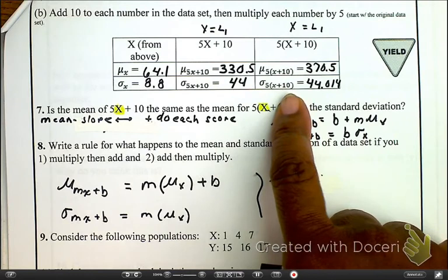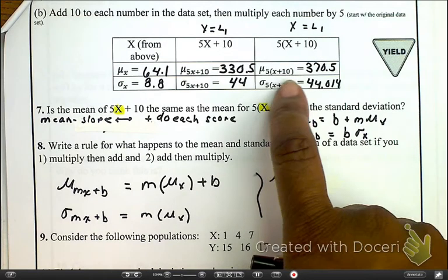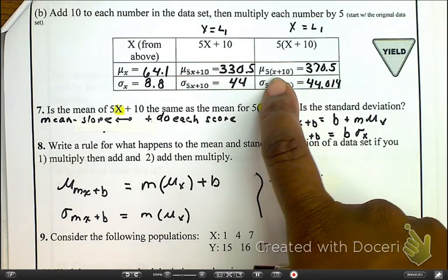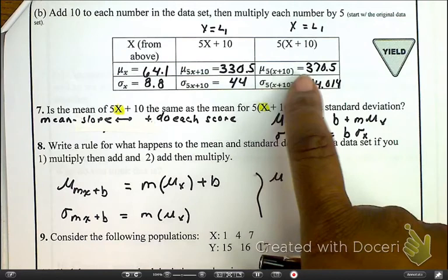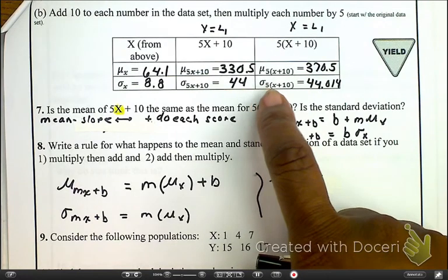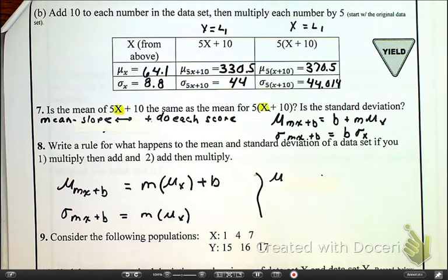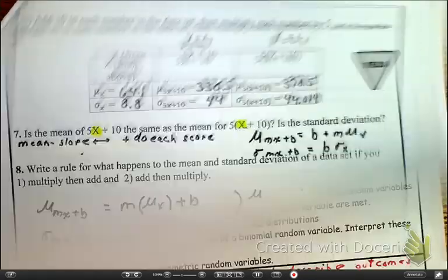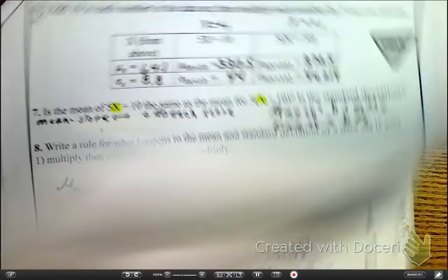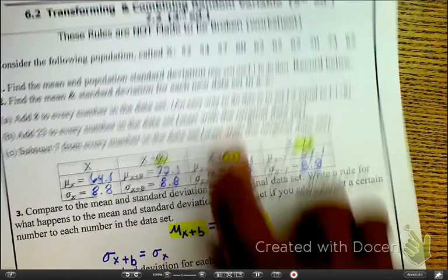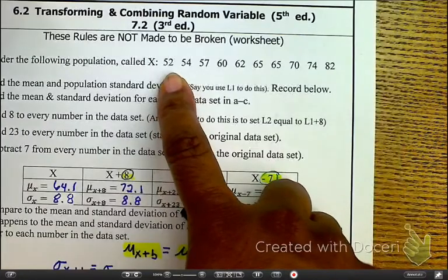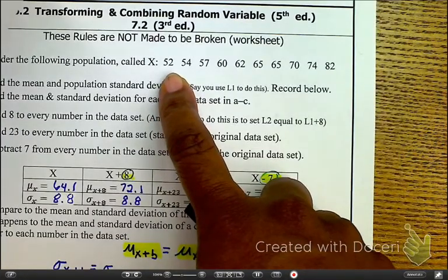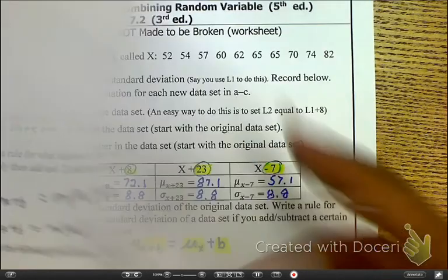But in this particular case, what happens, we are going to take each piece of data, add 10 to it, and then we're going to multiply it by 5. So with that being said, that's saying here that we took each of the pieces of data that we had before, right here. We add 5 to it, and then after we added 5 to it, we multiplied it by 10.